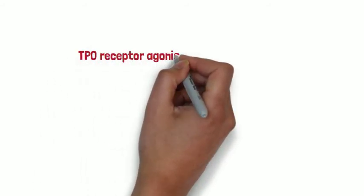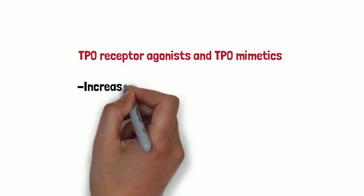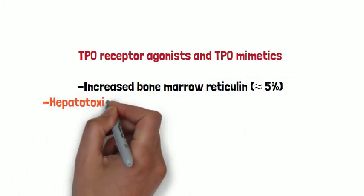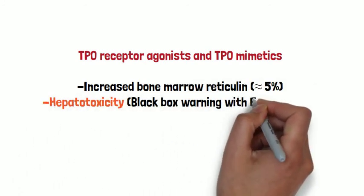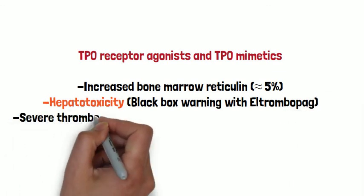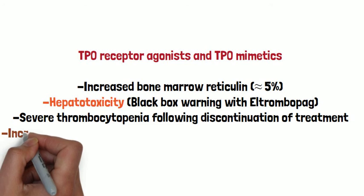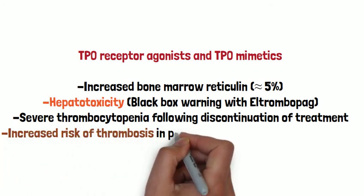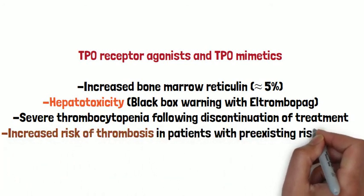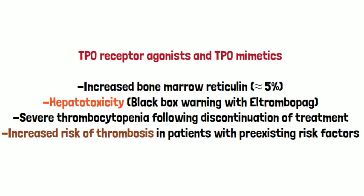TPO receptor agonists like eltrombopag and avatrombopag, and TPO mimetics like romiplostim can be used in refractory ITP. Side effects include increased bone marrow reticulin but no evidence for progressive or irreversible bone marrow fibrosis, hepatotoxicity with eltrombopag, severe thrombocytopenia following discontinuation of treatment, and increased risk of thrombosis in patients with pre-existing risk factors.